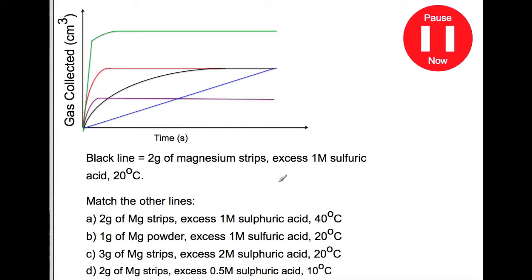Here's an example for you to try. Try and match the lines to the different scenarios that we have here. So the black line this one here is 2 grams of magnesium strips with excess 1M sulfuric acid at 20°C.